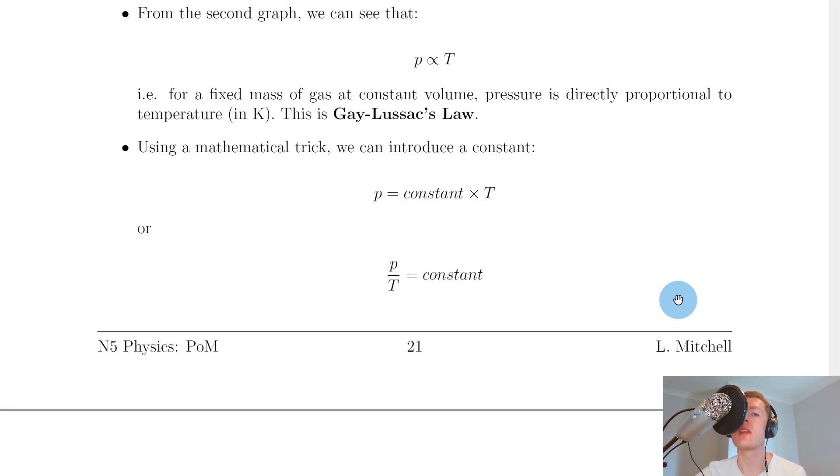Now you should remember the conclusion from the Gay-Lussac's law experiment, which was that pressure is directly proportional to temperature when we've got a fixed mass of gas at constant volume, and this was called Gay-Lussac's law or the pressure temperature law.